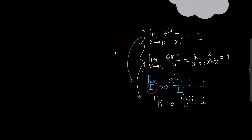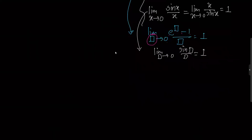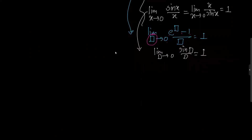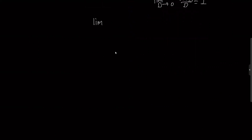I am going to use this equation directly with the formula. This is the limit x tends to 0 of 1 minus cos x divided by x squared.